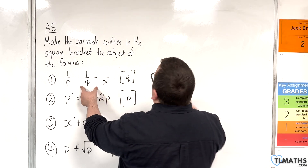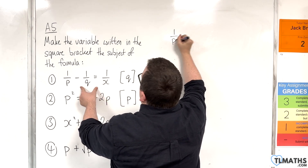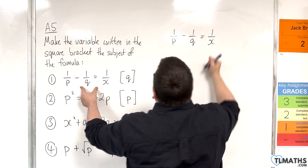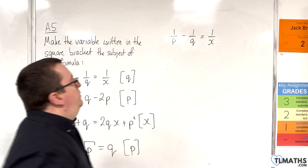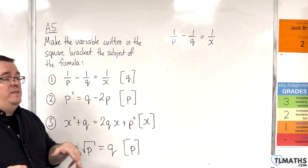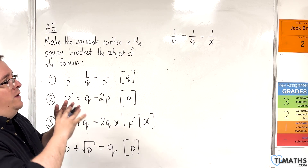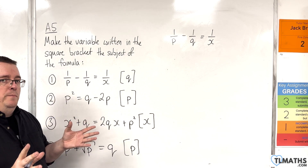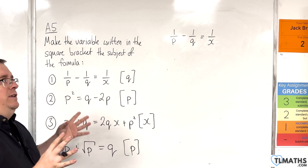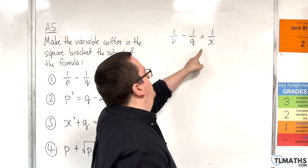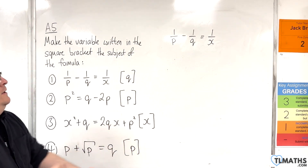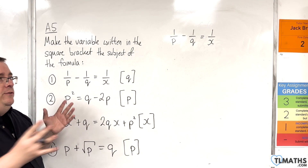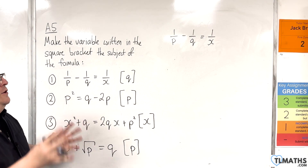First one: 1 over P take away 1 over Q is equal to 1 over X. We want to make Q the subject. Just as we've done in previous videos, we want to get rid of those fractions. So we're going to multiply through by the denominators. But we haven't looked at the example where there have been three fractions before. I'm going to do this step by step, but you could do this all in one go if you were confident.